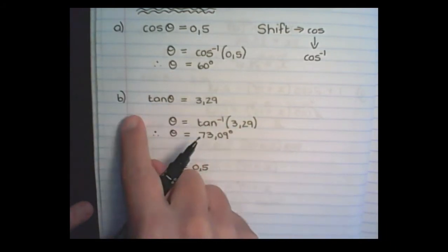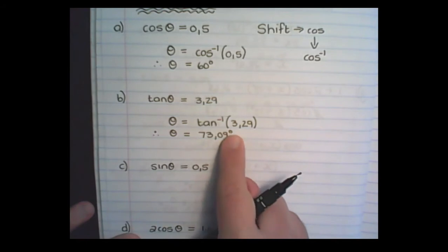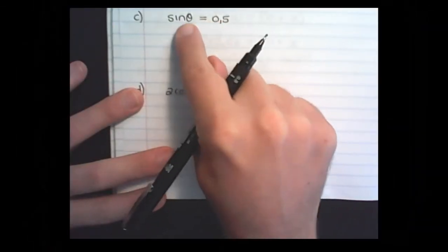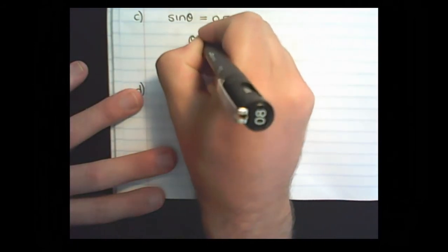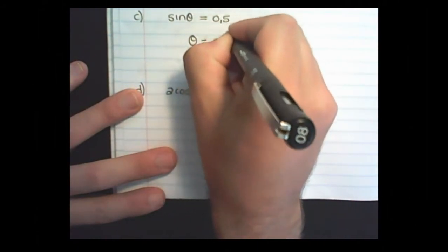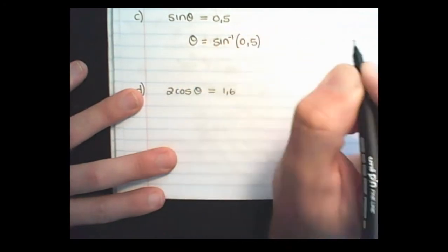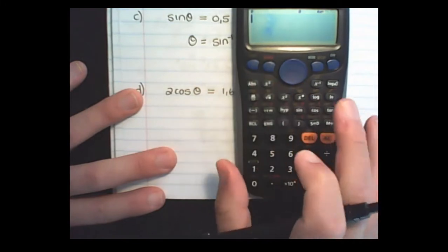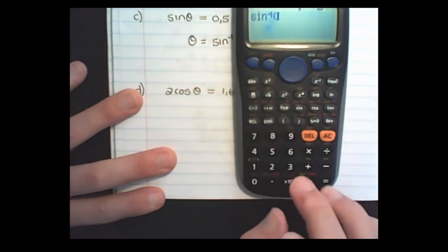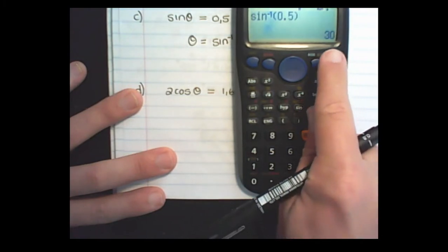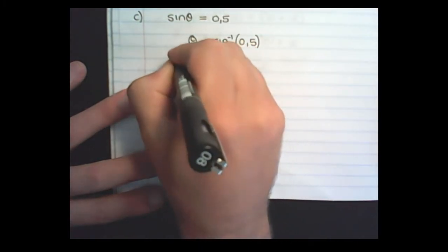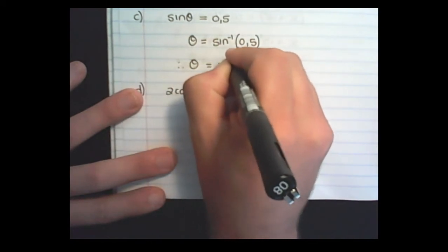It is okay to round off to two decimal places, and it is also important to show that it is an angle, so I must put degrees in there. In our next example, we have sin theta is equal to 0.5, so I am going to take the reverse of the sin ratio on the calculator: shift, sin, 0.5, close the bracket, equal — 30. That means the sin of 30 is equal to a half.